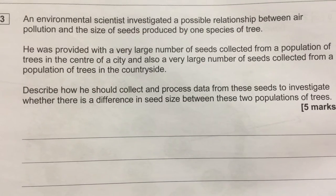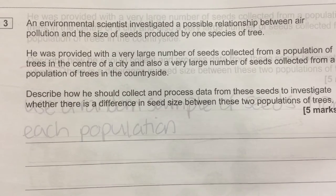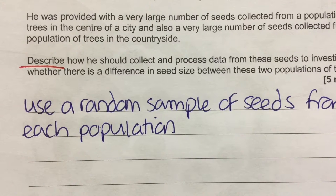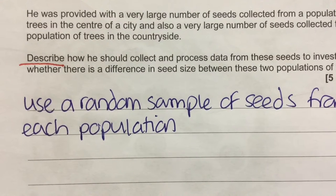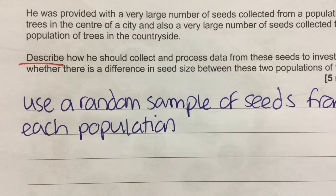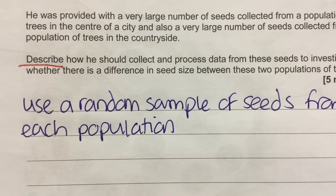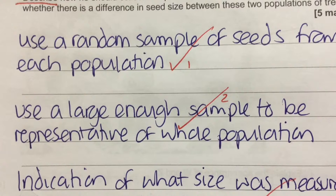The next part of the question carries five marks. An environmental scientist investigated a possible relationship between air pollution and the size of seeds produced by one species of tree. He was provided with a very large number of seeds from trees in the centre of a city and from trees in the countryside. The question asks how he should collect and process data to investigate whether there is a difference in seed size between the two populations. Since we can't check all seeds, the first thing to say is to use a random sample from each population, and the sample should be large enough to be representative of the whole population — for example, by finding the running mean and making sure it has settled.